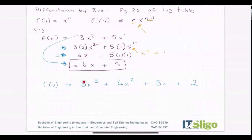Plus take down the power, five ones are five, reduce the power by one, plus zero for the constant 2.